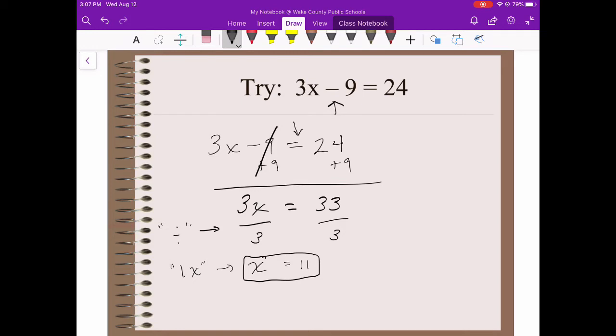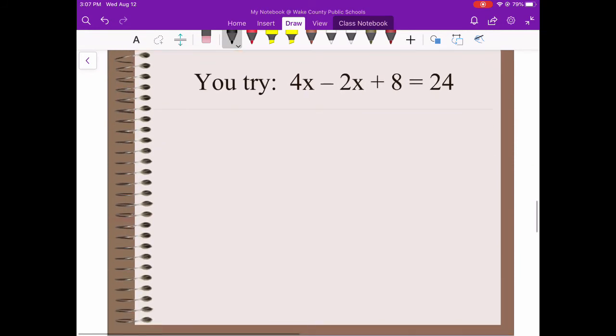We're going to try another example. Keep in mind that you can pause your screen at any time and try the example before you see me do it. Now we've got an additional step. We've got some like terms that we need to simplify with. Going back to what we talked about at the beginning of this video, we need to simplify before we start our solving process. 4x and 2x are like terms because they both have an x. 8 is not a like term because it doesn't have an x, and 24 is not even on the same side. That's a mistake I see often.